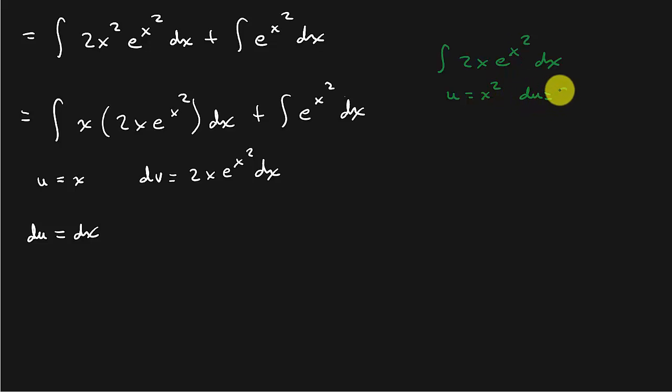And then du is 2x dx. So you see, I've got the 2x dx. There's 2x dx. So I can replace that with du and replace the x squared with u. So that's going to give me e to the u du, which is e to the u, and this plus c. And so v is equal to x squared. I'm going to put the x squared back in for the u.